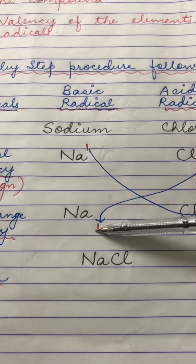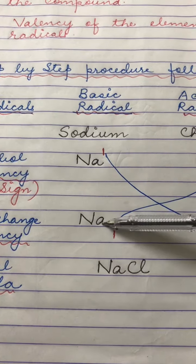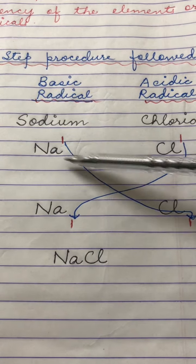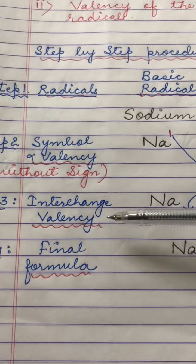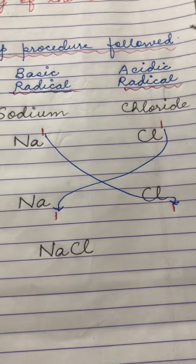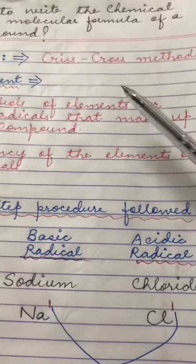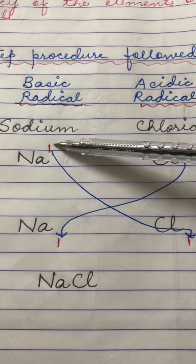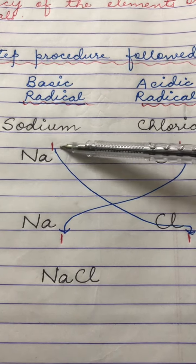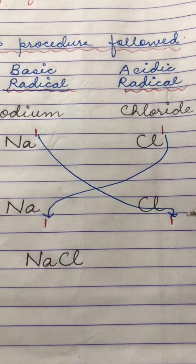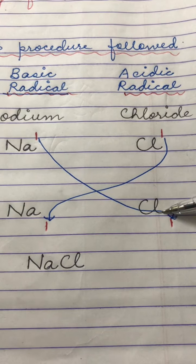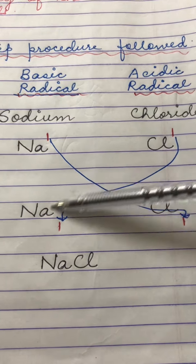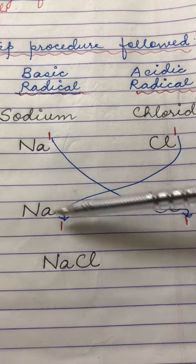The next step that we follow is that you write the same elements or the same radicals as it is, but you do not write the valency this time. In the next step you interchange the valency. Interchanging means this is the reason why we call it as a crisscross method, because the valencies are getting crisscrossed. Valency of sodium which was one and which was written as superscript now comes as a subscript for chlorine, for the chloride radical. And the one valency of the chloride radical comes down here as a subscript for sodium.